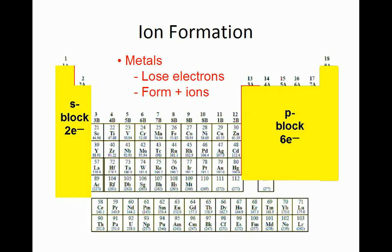Atoms in the first, second, and third columns of the main group are termed metals and have one, two, or three valence electrons respectively. Metals tend to form positively charged ions or lose electrons.